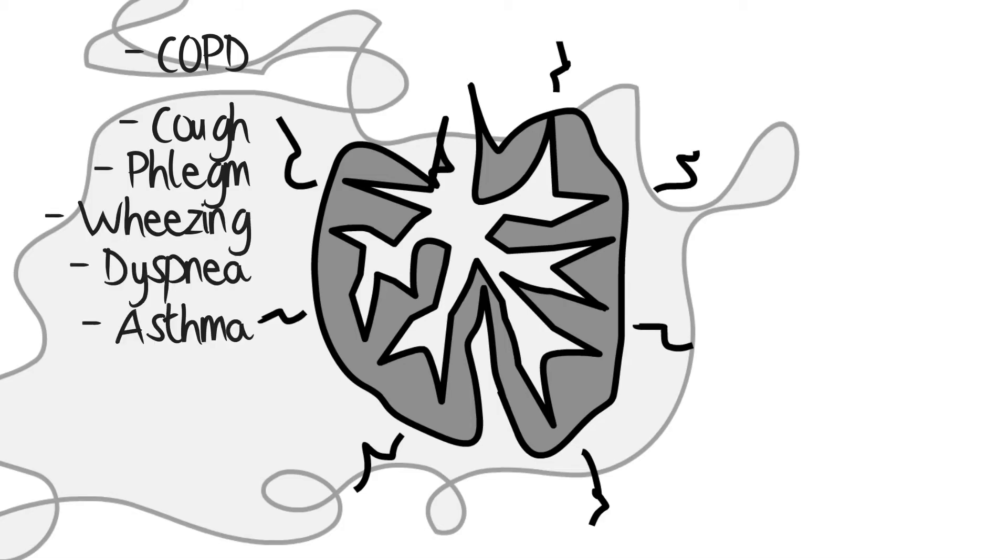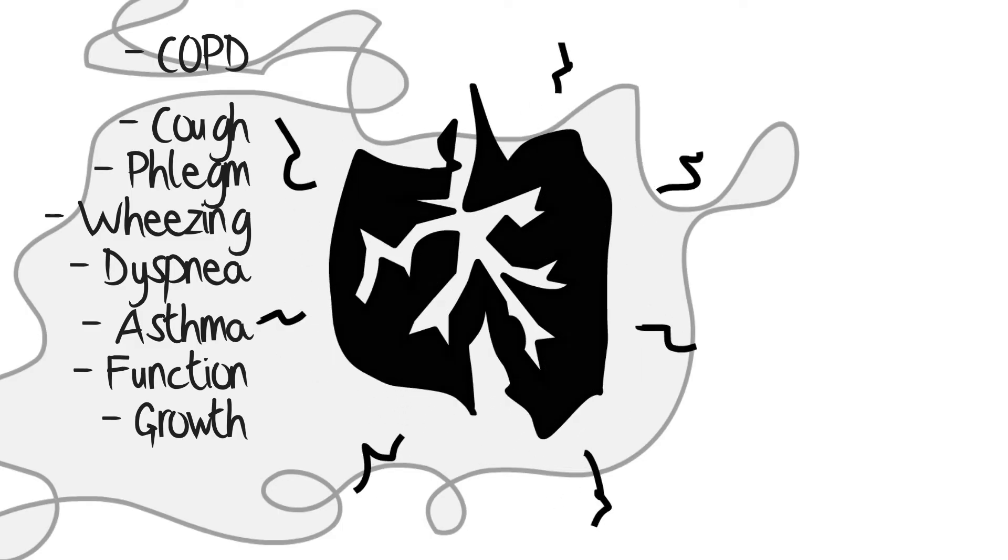Smoking exacerbates asthma, reduces lung function, and impairs lung growth in childhood and adolescence. It also causes acute respiratory illnesses, like pneumonia.